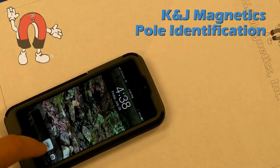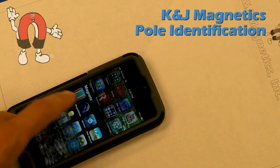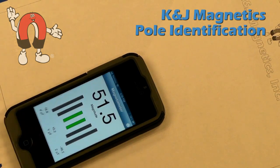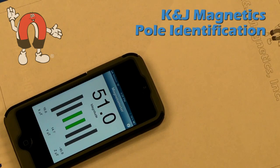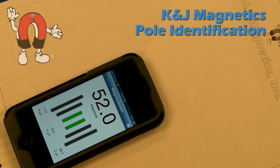Here we use a smartphone to identify the poles of a magnet. We'll start out with the free magnet meter app, or magnetometer.